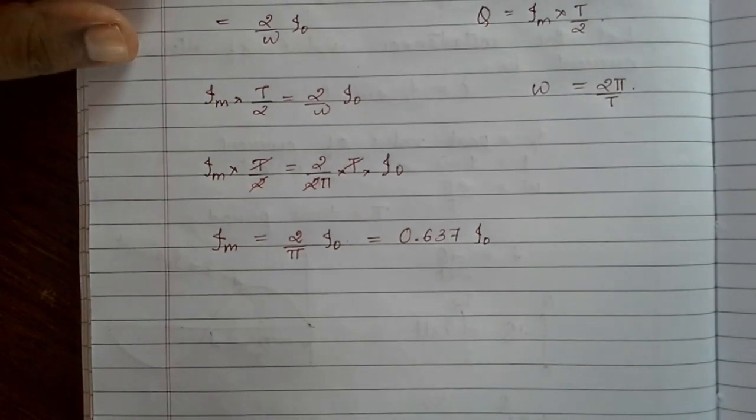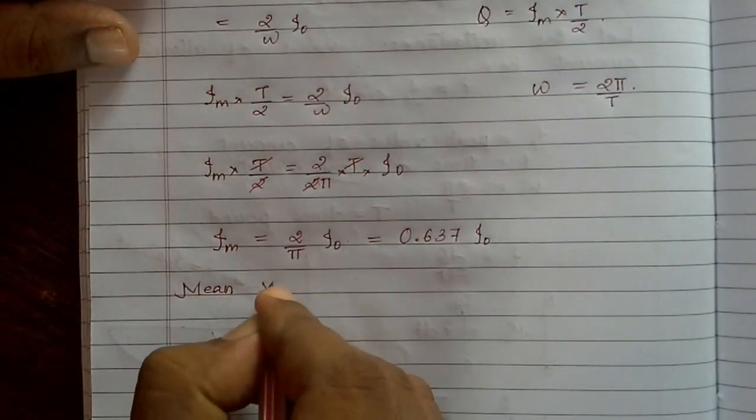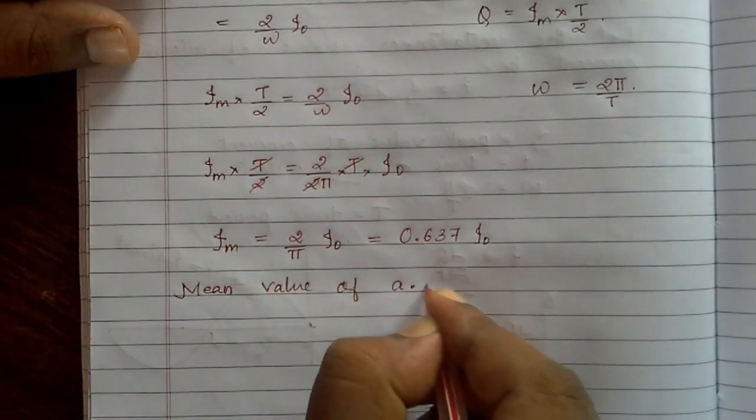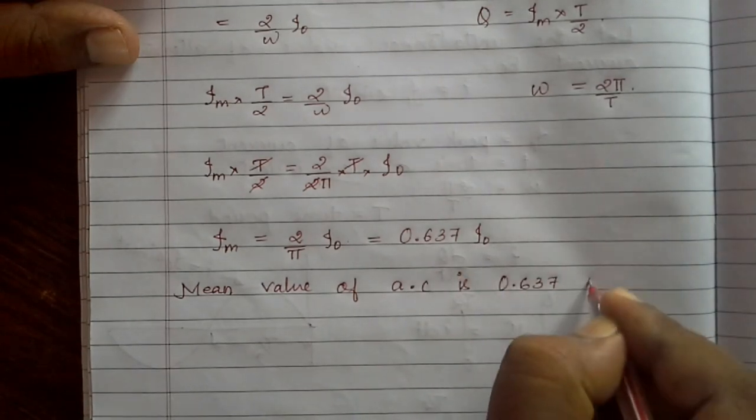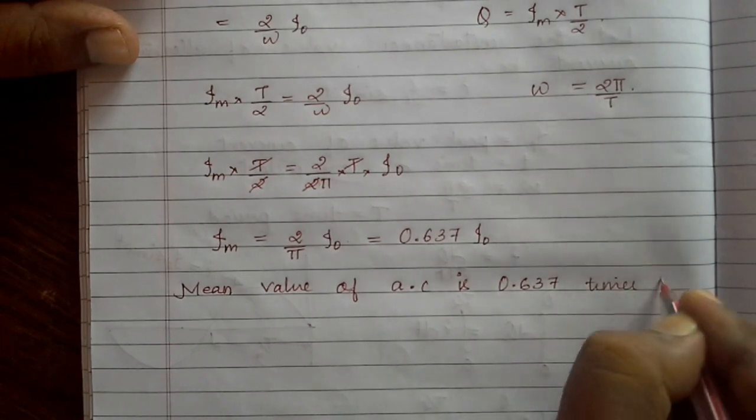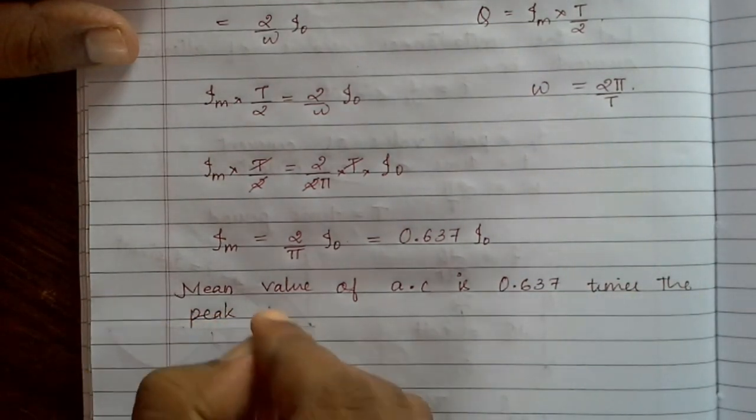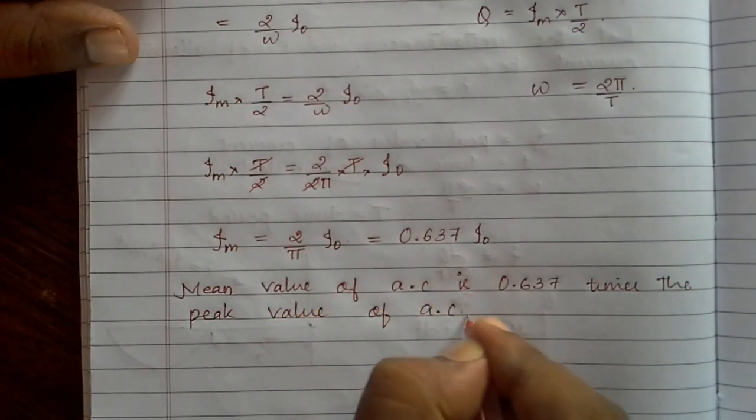We can say the mean value of AC is 0.637 times the peak value of AC.